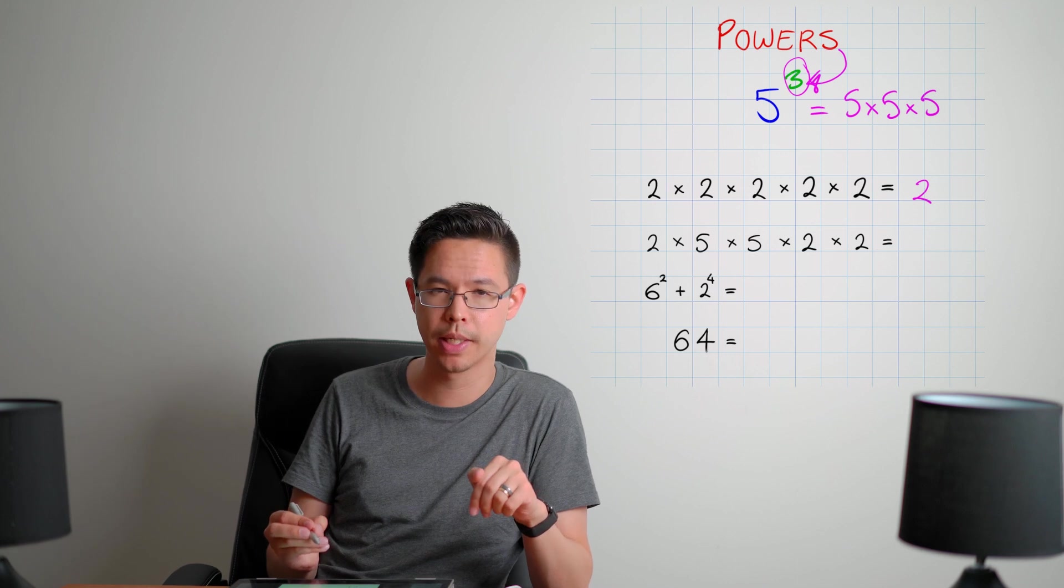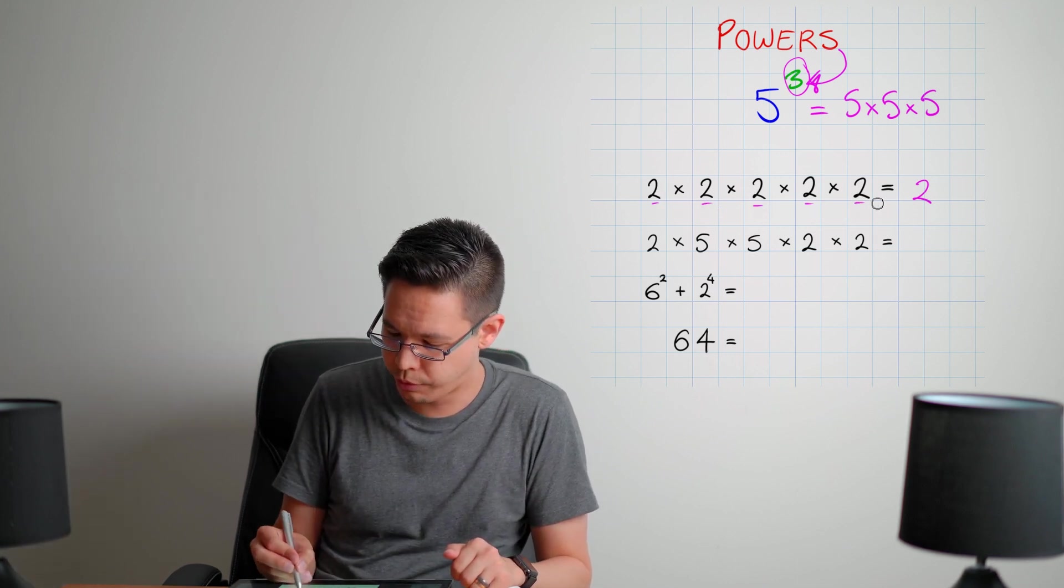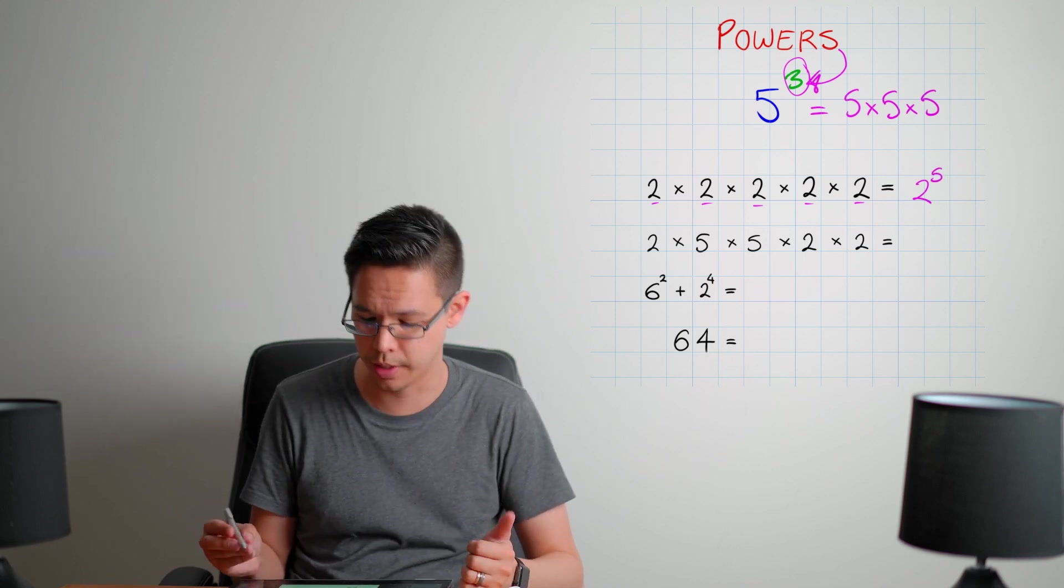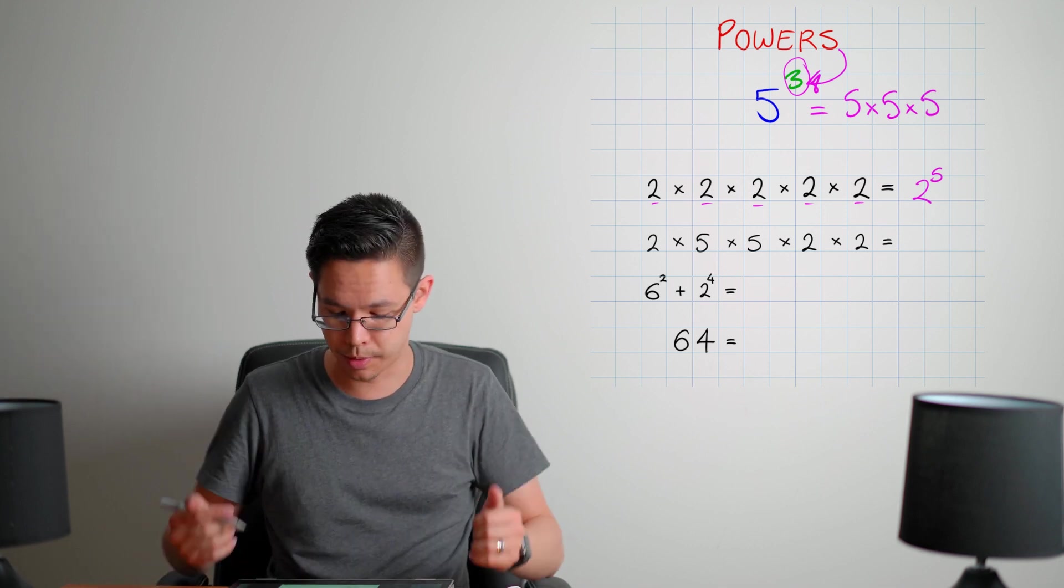Well, how many times has it been multiplied by itself? Well, let's see, it is one, two, three, four, five. Yep, five times it's multiplied by itself. So it'll be two to the power of five. And that's how the index form you would have presented as.